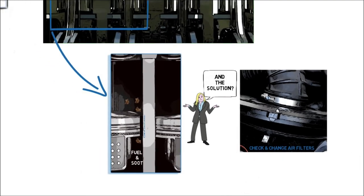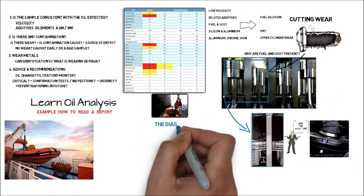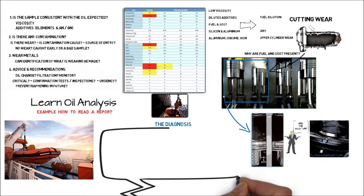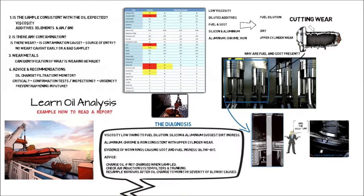So let's put all we have learned into a diagnosis for the client. I always start with viscosity which is low for inter-fuel dilution. I then move on to contamination such as silicon and aluminum suggesting dirt ingress. It may also be sand if the aluminum is only wear. But in either case it doesn't matter too much as the advice is the same. Then I comment about the wear metals and identify them as upper cylinder wear.